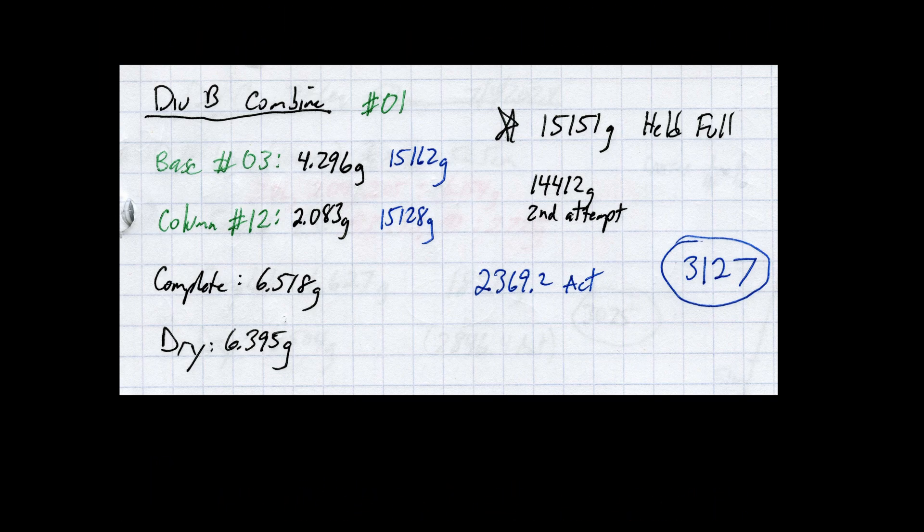Here is my notebook page for the final assembly. You can see that I am keeping track of which components I used - base number 3 and column number 12. I am also tracking what the original completed masses were: 4.296 grams for the base and 2.083 grams for the column.